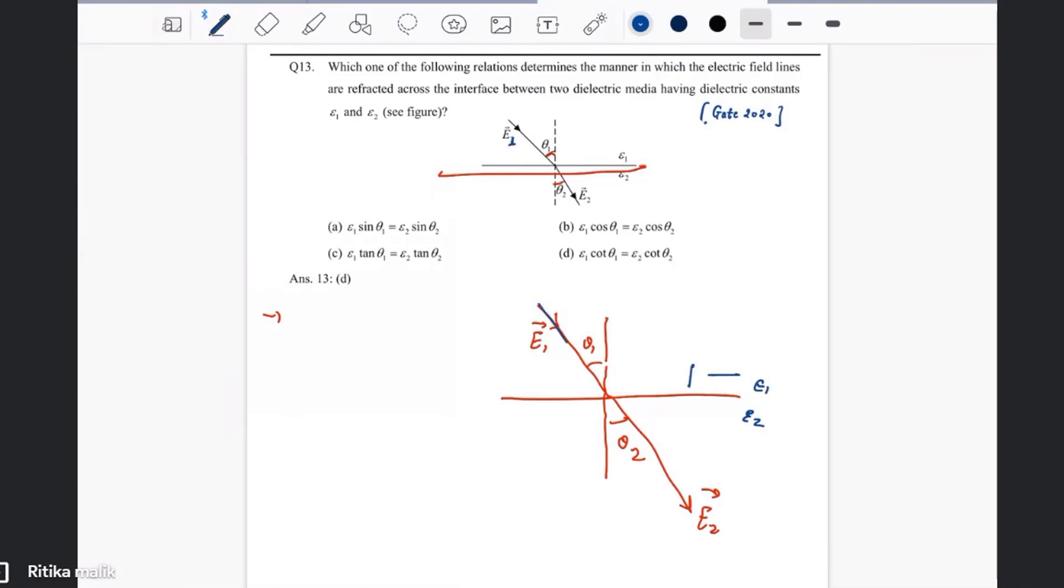So we have the electric field, we just break it into parallel and perpendicular components. If this angle is theta 1, then we are left with E1 cos theta 1, which is the perpendicular component, and E1 sin theta 1, which is the parallel component.